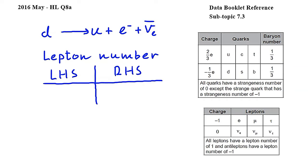In this question we have to show that lepton number is conserved in the given decay. I wrote down the equation for the decay, and we will compare the total lepton number on the left-hand side and on the right-hand side of the equation.